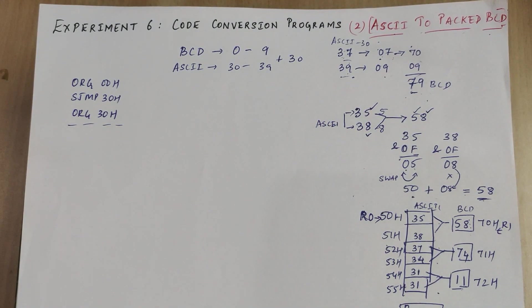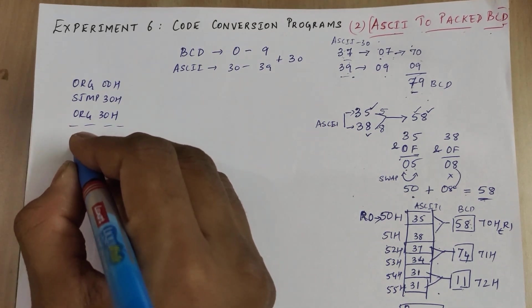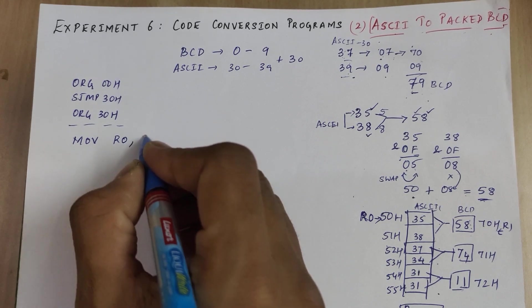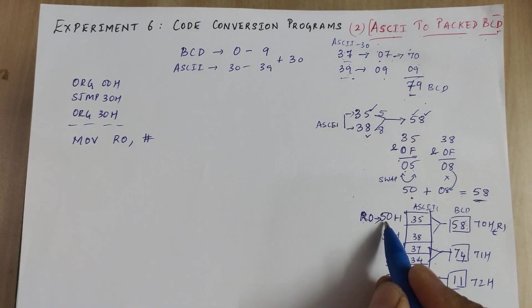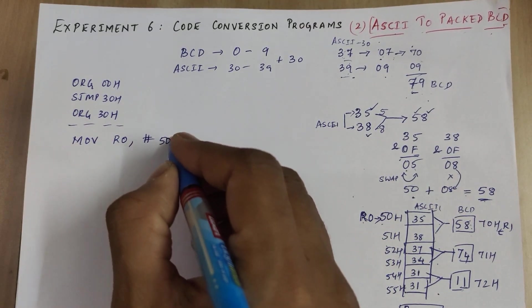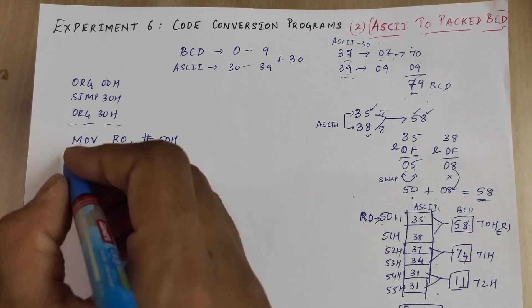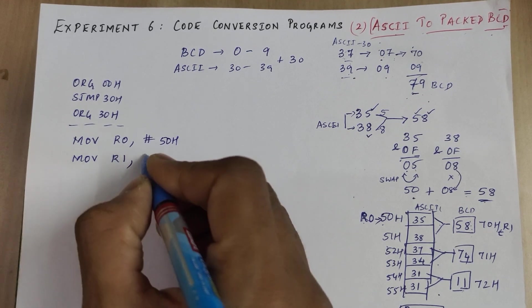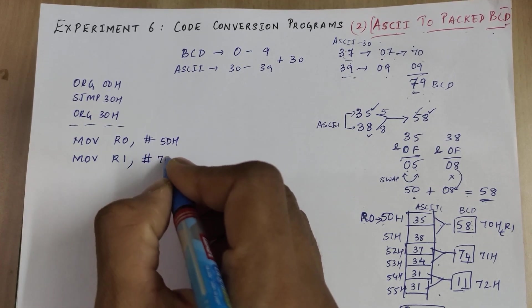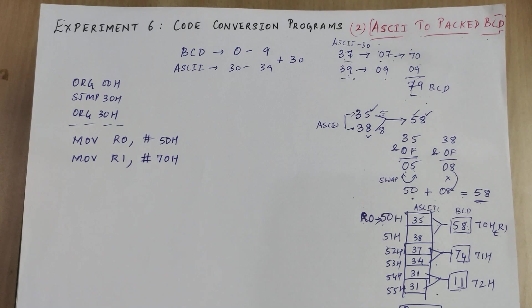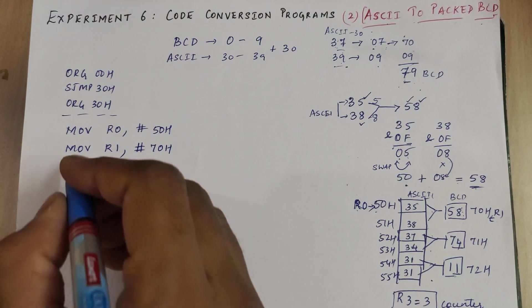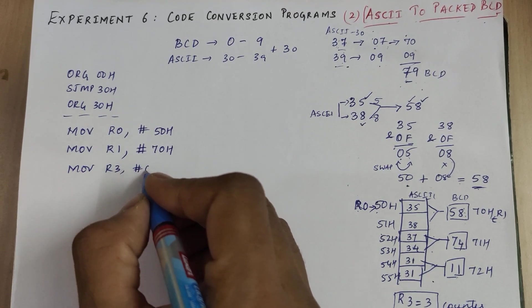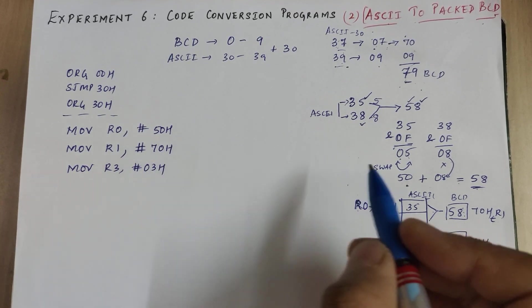Now let's start the program. To start the program we need to initialize. Move R0 comma hash 50H. We want R1 to point to destination, so move R1 comma hash 70H. And then we need a counter variable R3, move R3 comma hash 03H.